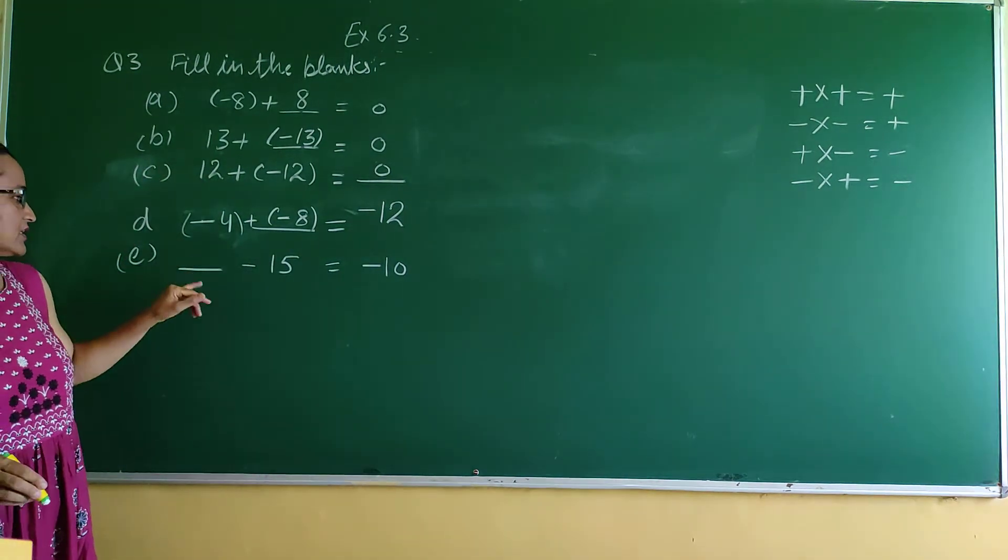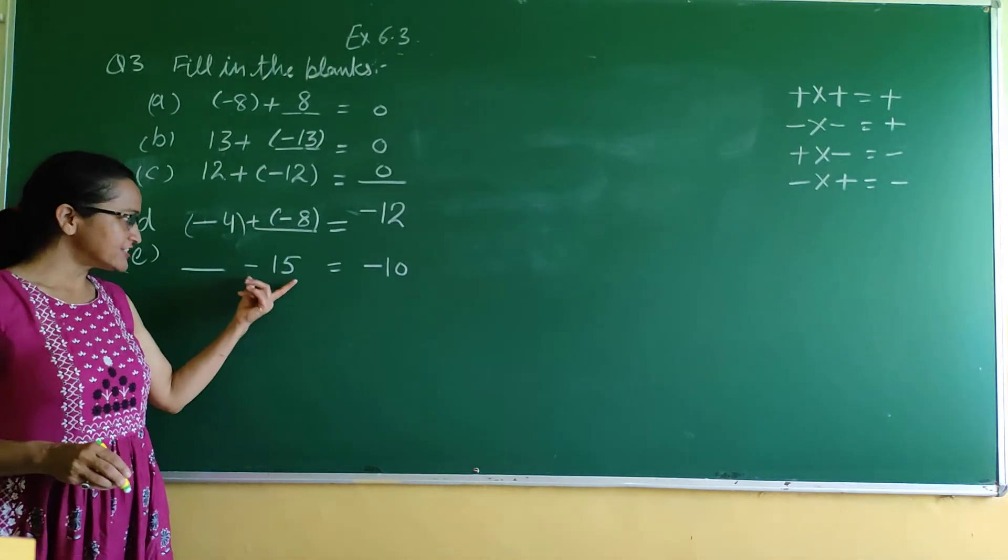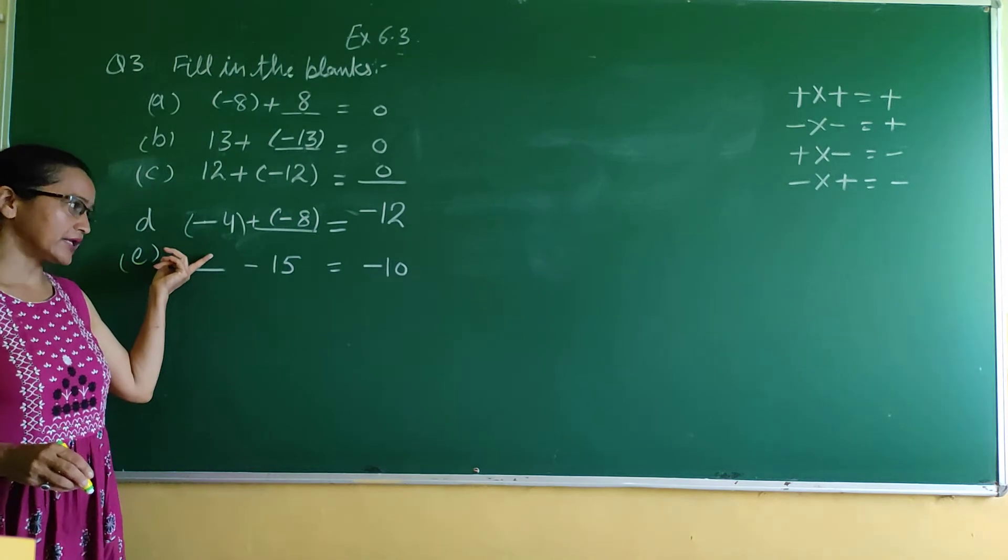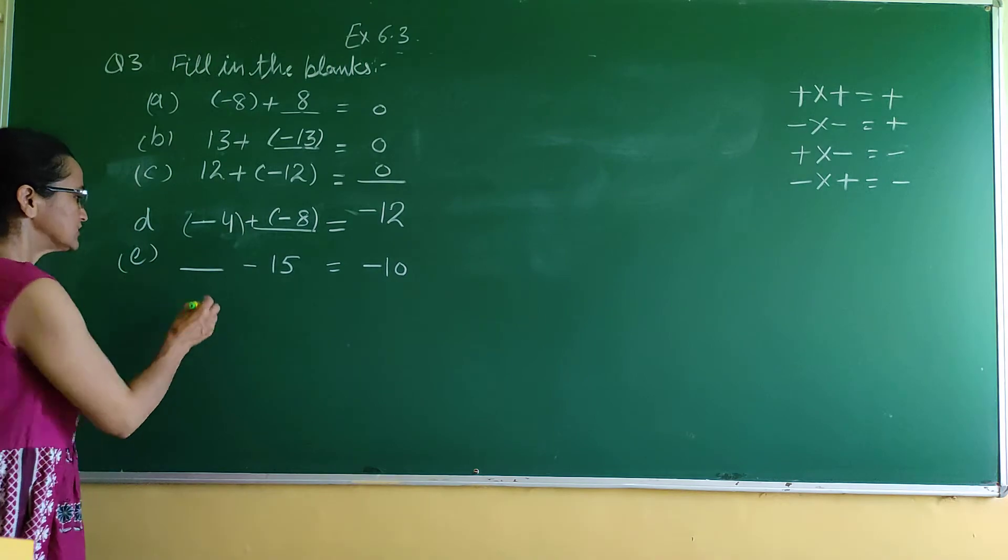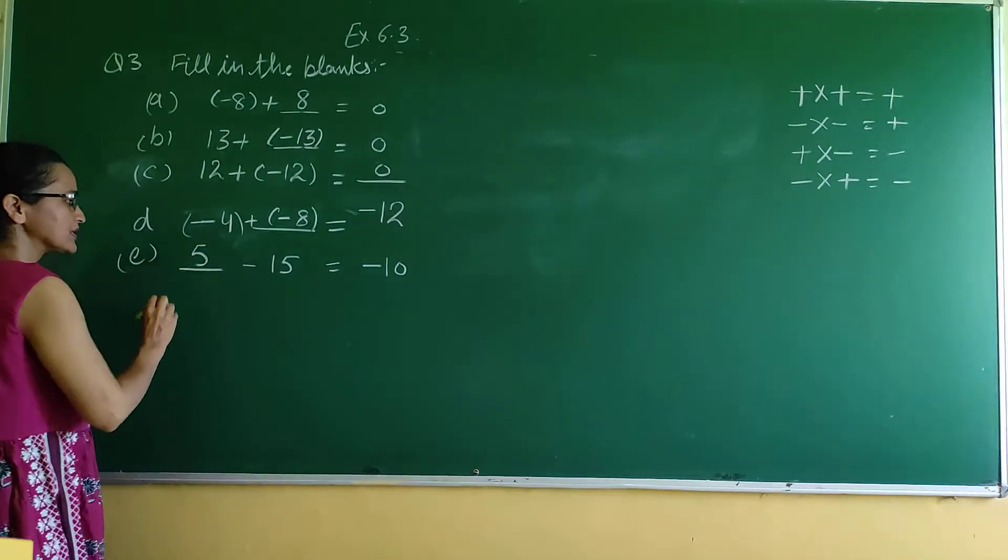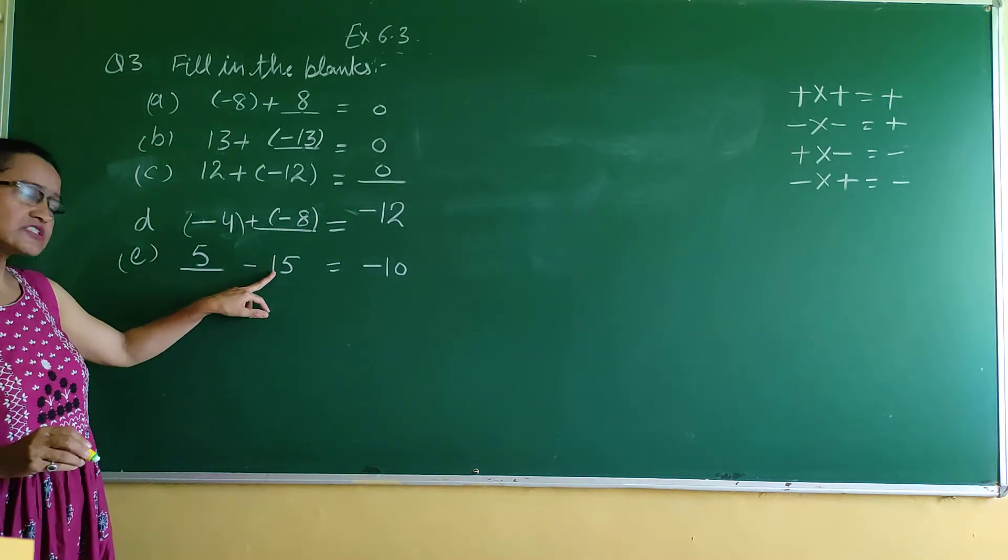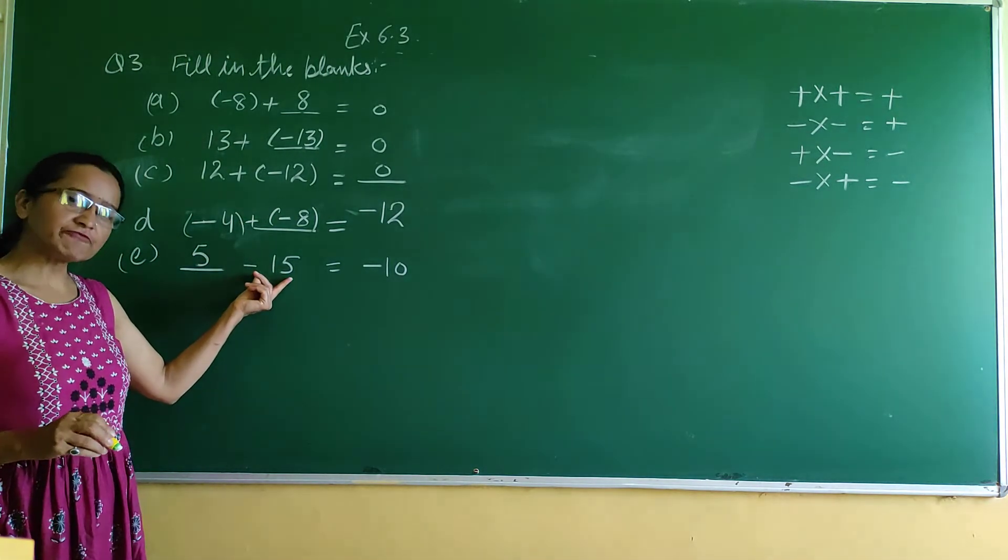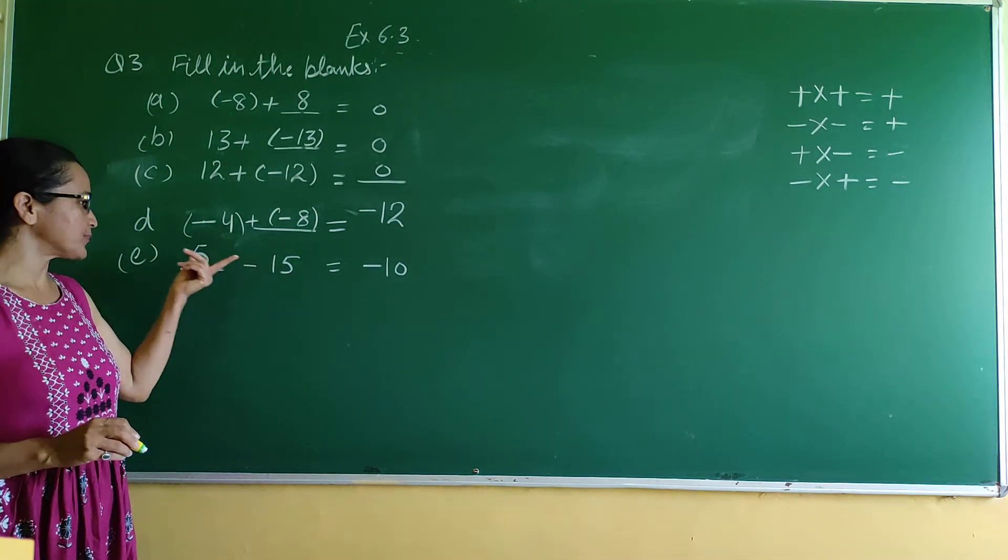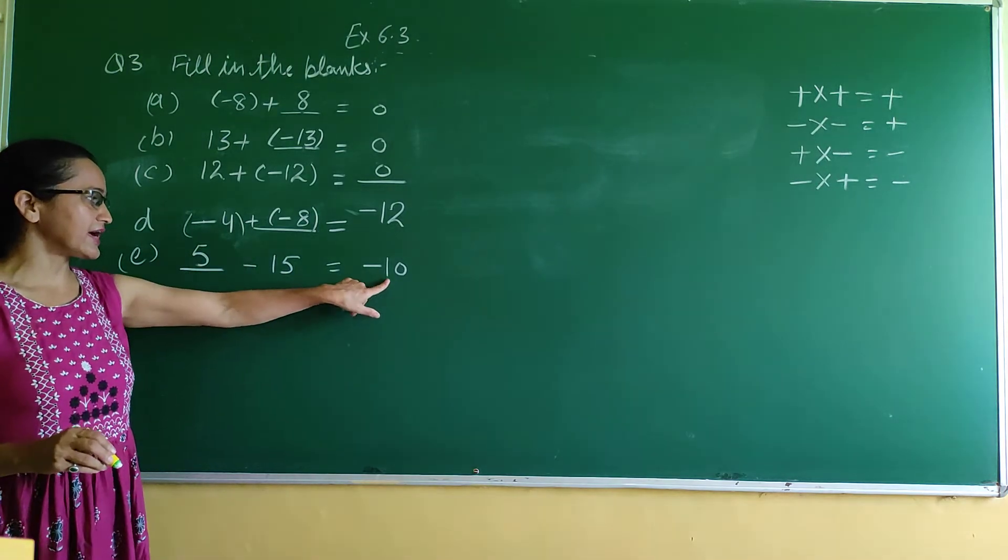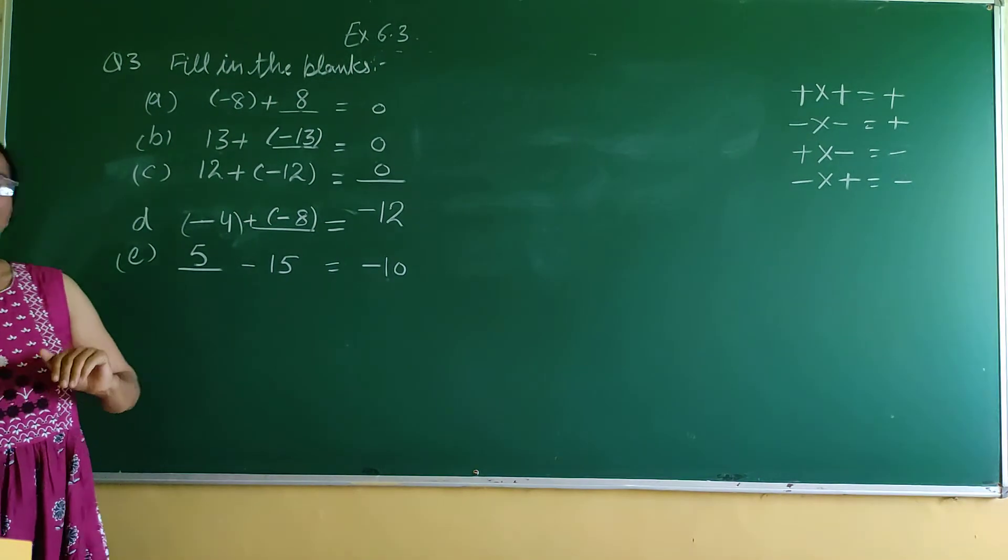Next is blank minus 15 equals -10. To get -10, we need +5. We have +5 and -15, which have different signs, so we subtract. When numbers have different signs, we subtract and take the sign of the larger number. Since 15 is larger and negative, we get -10. This completes the question.